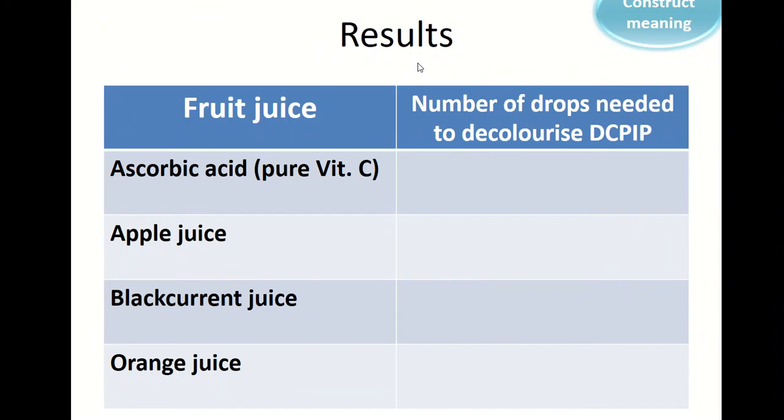Okay, so now you need to record your results in a table like this one here. So we've got two columns, one with our fruit juices on the left, and then the number of drops that were needed. So I want you to go back in the video and fill in the numbers for each one. So for example, beside ascorbic acid, you're going to write in 20, and then you're going to copy in the correct number for each: apple juice, blackcurrant juice, and orange juice.